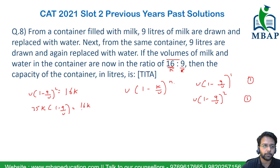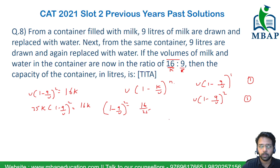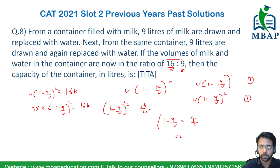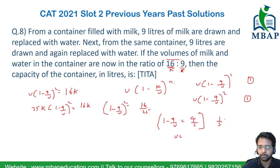Taking the square root on both sides, it becomes 1 minus 9 upon V equals 4 by 5. Solving this expression: 1 minus 4 by 5 equals 1 by 5, so 1 by 5 equals 9 upon V. Therefore, the initial volume V equals 9 times 5, which is 45 liters.